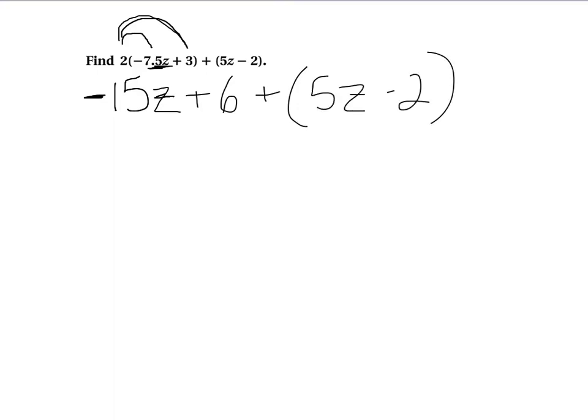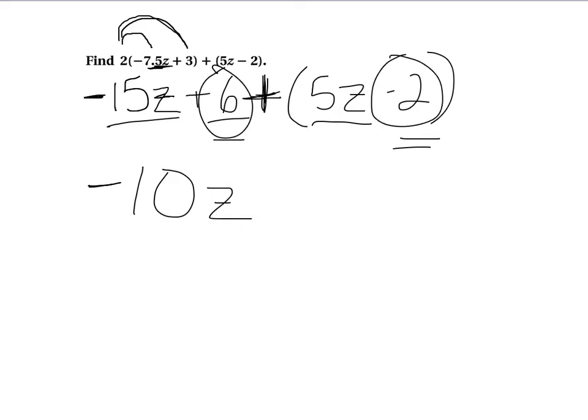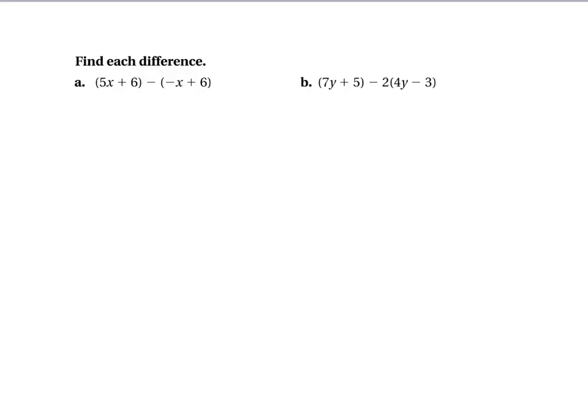Now I go ahead and I combine my like terms. I've got a like term and a like term, like term and a like term. Well, negative 15z, I'm going to now add 5z. That's going to get me a negative 10z. And then I have a positive 6. Taking 2 away gets me a positive 4.